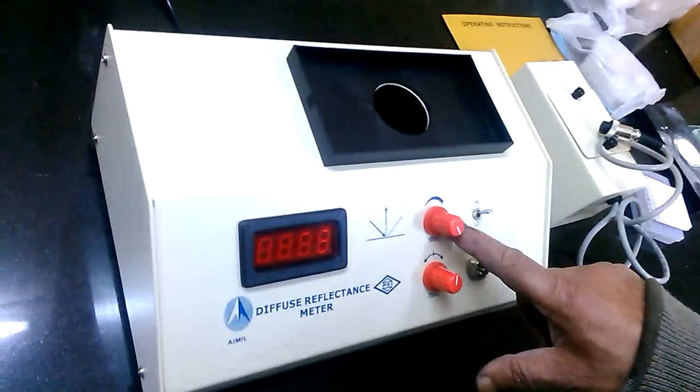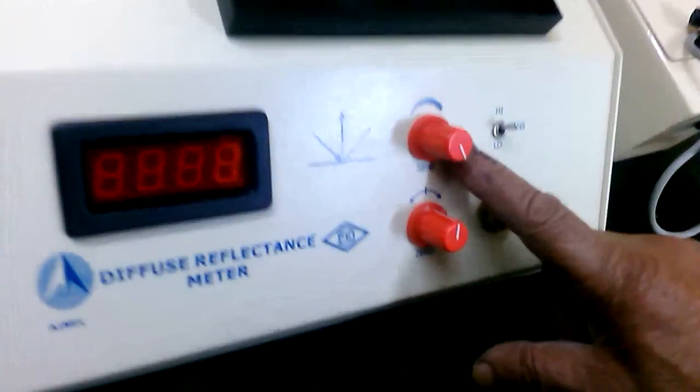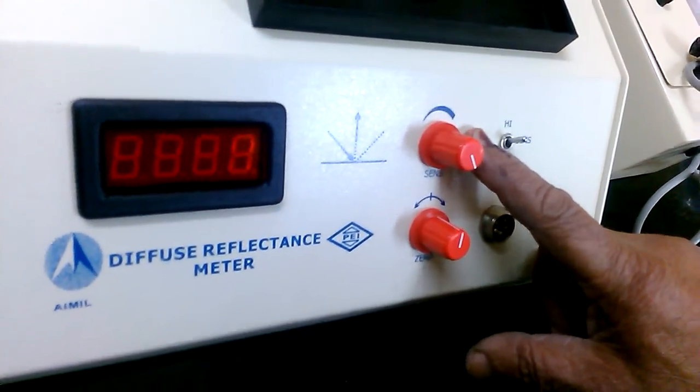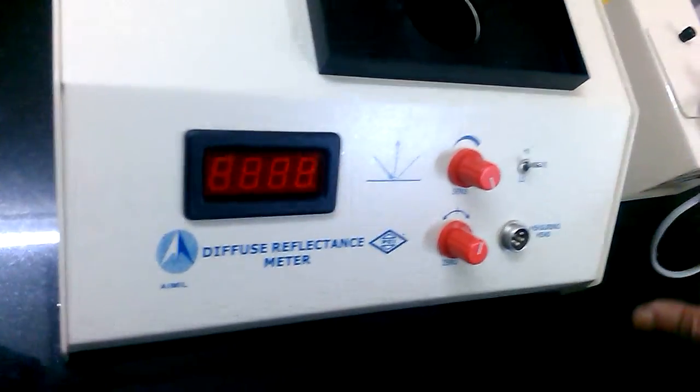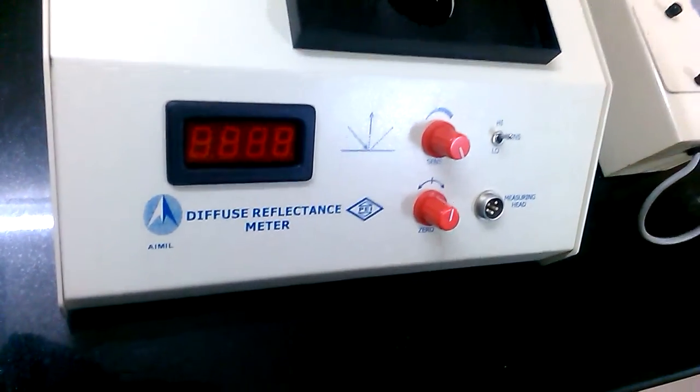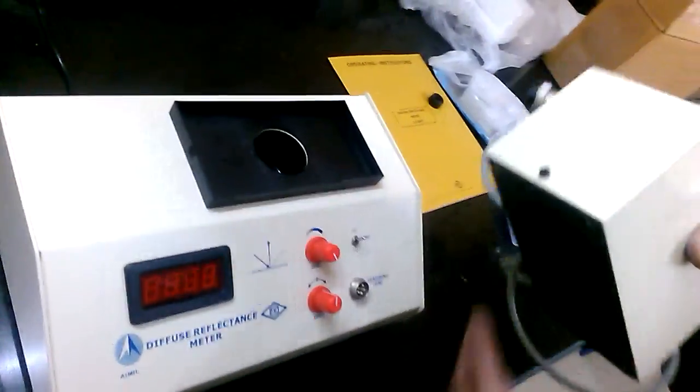This is DPM and this is sensitivity knob to set the reading. This is zero control knob, this is the plug where the measuring head is fitted.